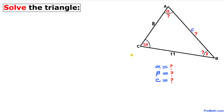Welcome to pre-math. In this video tutorial we have a scalene triangle ABC where we have been given one angle and two sides of this triangle, and now we are going to find the two missing angles and one side. So let's go ahead and get started with the solution.